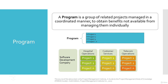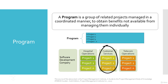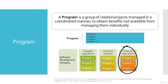For example, if you are working in a large software development company responsible for developing software products for public and private sectors — mainly for hospital operations, customer services, and telecom operations — then we have three programs. All IT projects related to hospital operations will be managed under the program called hospital operations, all projects related to customer services will be under the customer services program, and similarly all projects related to telecom operations will fall under the telecom operations program.